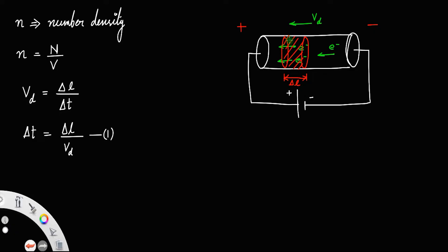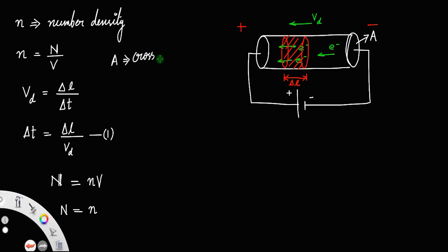We need to find how many electrons are present in this cylinder. The number of electrons equals number density into volume. So the total number of electrons N equals n times volume. Let A be the cross-sectional area. Volume equals cross-sectional area into length, so V = A times delta l.